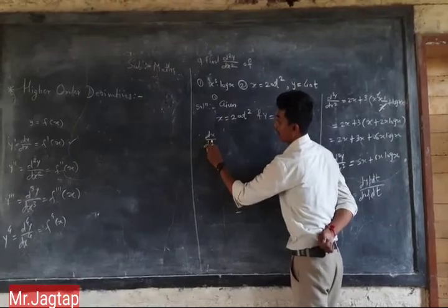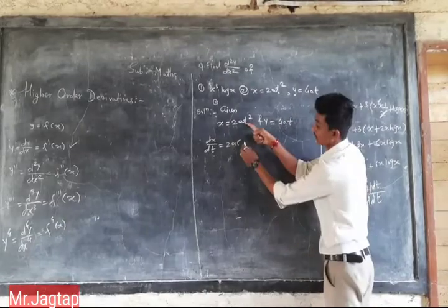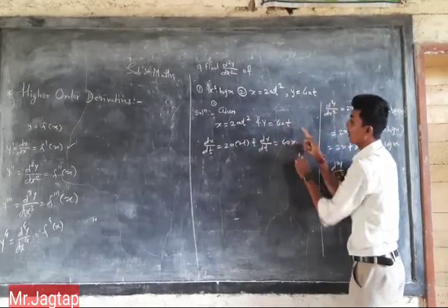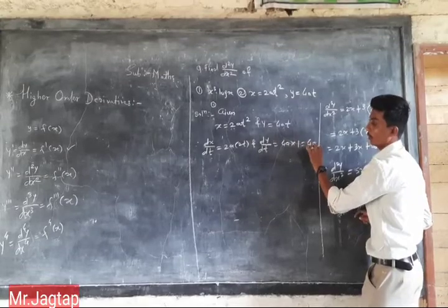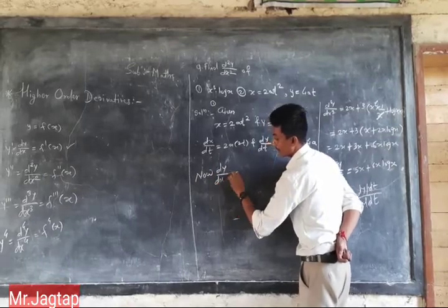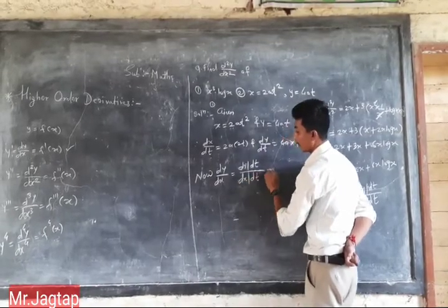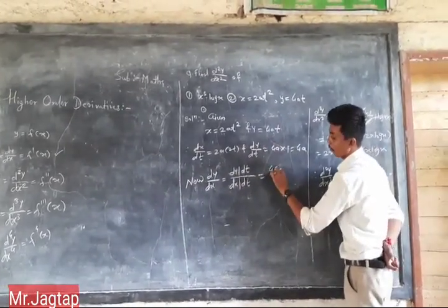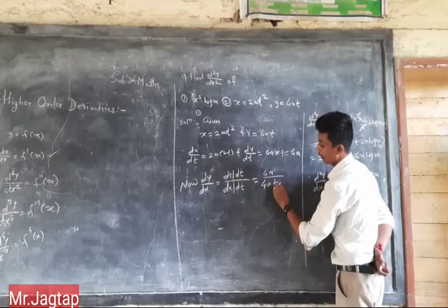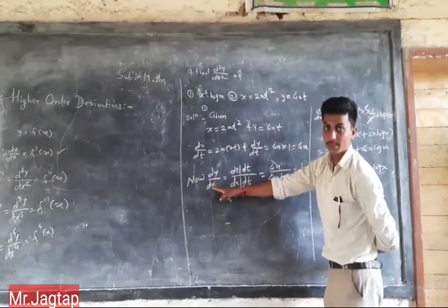Therefore dx/dt: derivative of 2t-squared is 4t. And dy/dt equals 4a, since 4a is constant and derivative of t is 1, so dy/dt equals 4a. Now dy/dx equals dy/dt upon dx/dt equals 4a upon 4t. The 4 cancels, leaving dy/dx equals a/t.